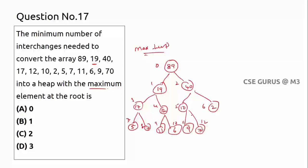Finally, insert 70. Check 70 against its parent 10: 70 is greater, so interchange — 10 goes down, 70 goes up. Now check 70 against its new parent 40: 70 is greater, so interchange — 40 goes down, 70 goes up. Now 70 is less than 89, so it stops. Only two interchanges were needed. The answer is option C.